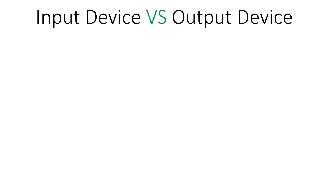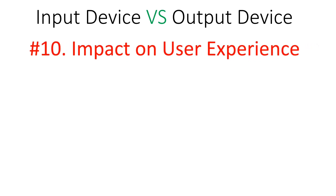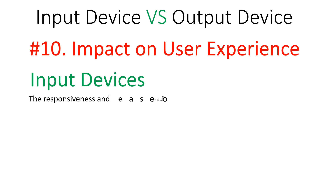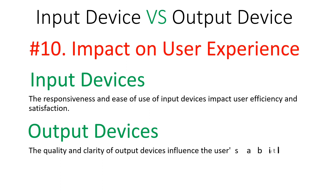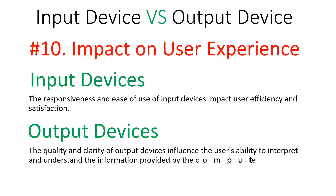Finally, regarding impact on user experience, the responsiveness and ease of use of input devices impact the user's efficiency and satisfaction. The quality and clarity of output devices influence the user's ability to interpret and understand the information provided — the output must be clear enough for the user to easily understand.